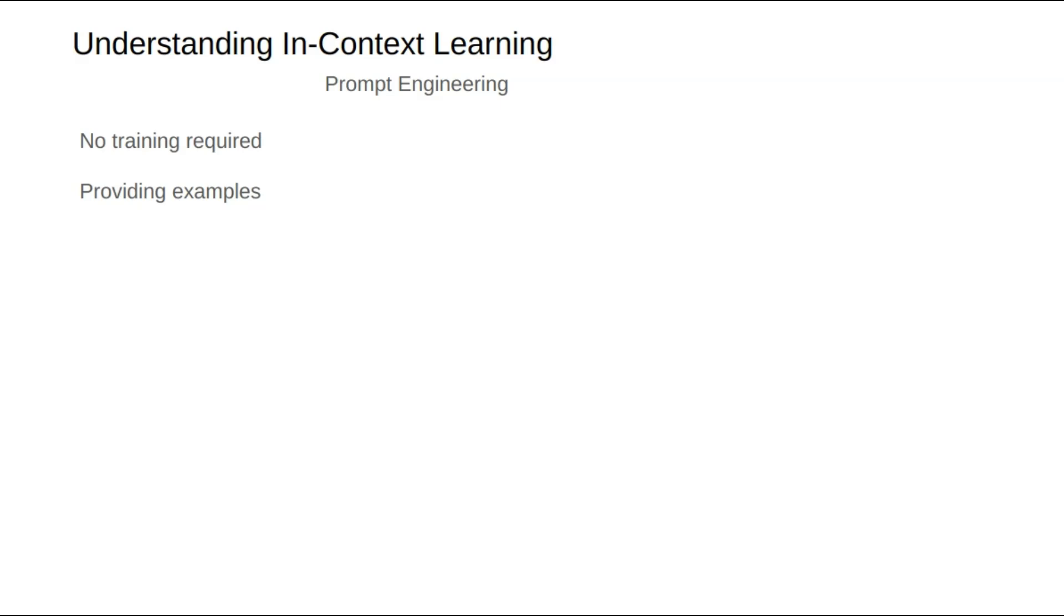To summarize in plain terms, in-context learning can be thought of as the model not realizing what it knows. The model inherently possesses certain capabilities, but it doesn't know that it does.